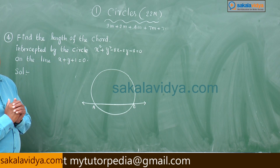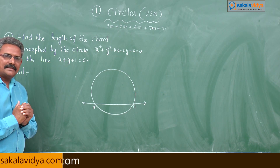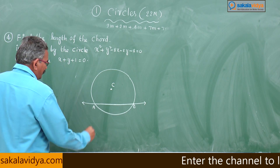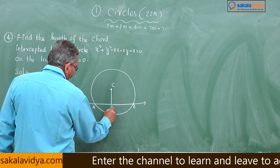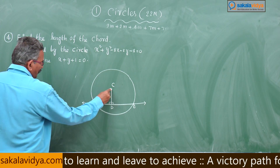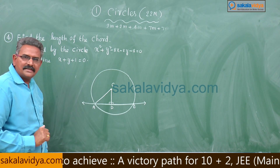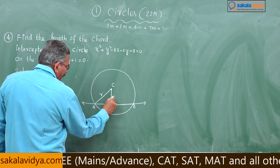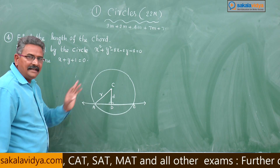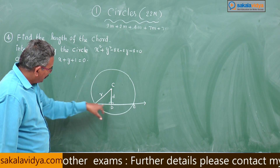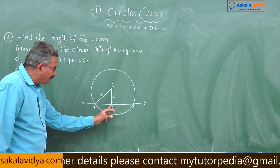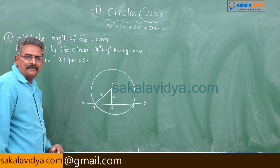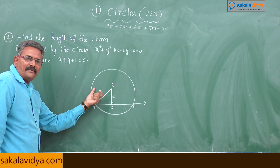Just think about how to find out that length of the chord. In lower classes you might have discussed it. If the centre is known, and if you draw the perpendicular from the centre onto AB at point D, then CD is the perpendicular. CA represents r, the radius of the circle, and the perpendicular distance is d. This is a right-angle triangle, so with two sides known, the third side AD can be found. Since D is the midpoint, AD equals DB, so AB equals 2 times AD.